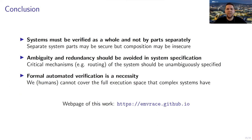Conclusions of this work: Systems must be verified as a whole and not by parts separately, because even when individual parts are verified, putting them together may lead to insecure executions. Ambiguity and redundancy should be avoided in system specification — critical mechanisms like routing were underspecified by EMV, leading to this attack. Formal verification is a must nowadays, as humans cannot possibly deal with the full execution space that a complex system may have. You are welcome to visit our webpage for details on this work and our previous PIN bypass. Thank you very much for your attention.